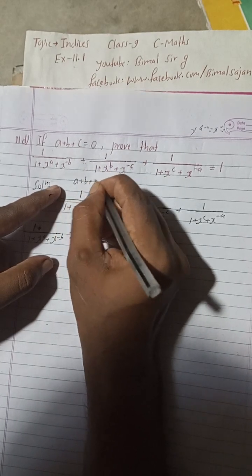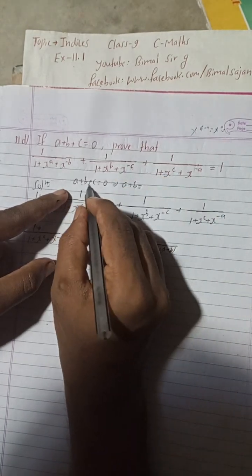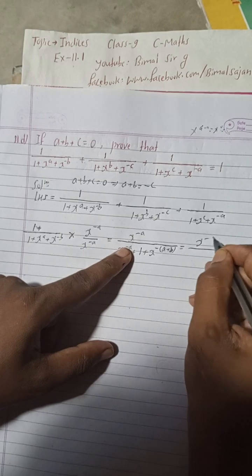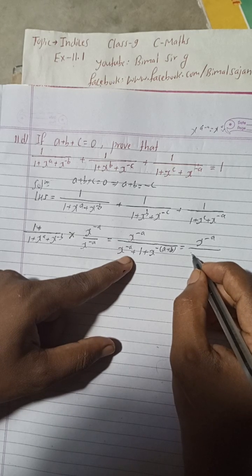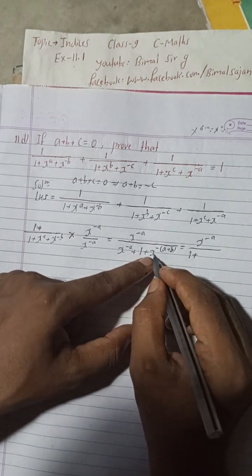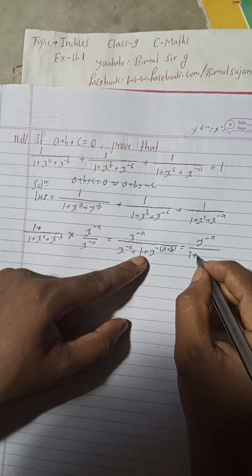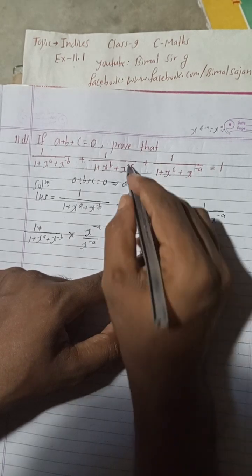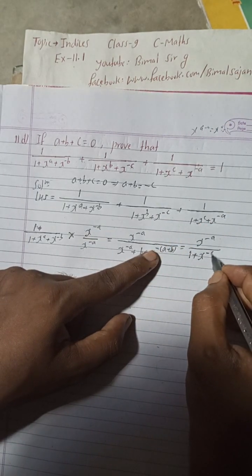Now there is given that a plus b plus c is equal to 0. This implies a plus b is equal to minus c. So wherever we have x^(-(a+b)), since a plus b equals minus c, this becomes x^(-(-c)), which is x^c. So the denominator becomes 1 plus x^c.